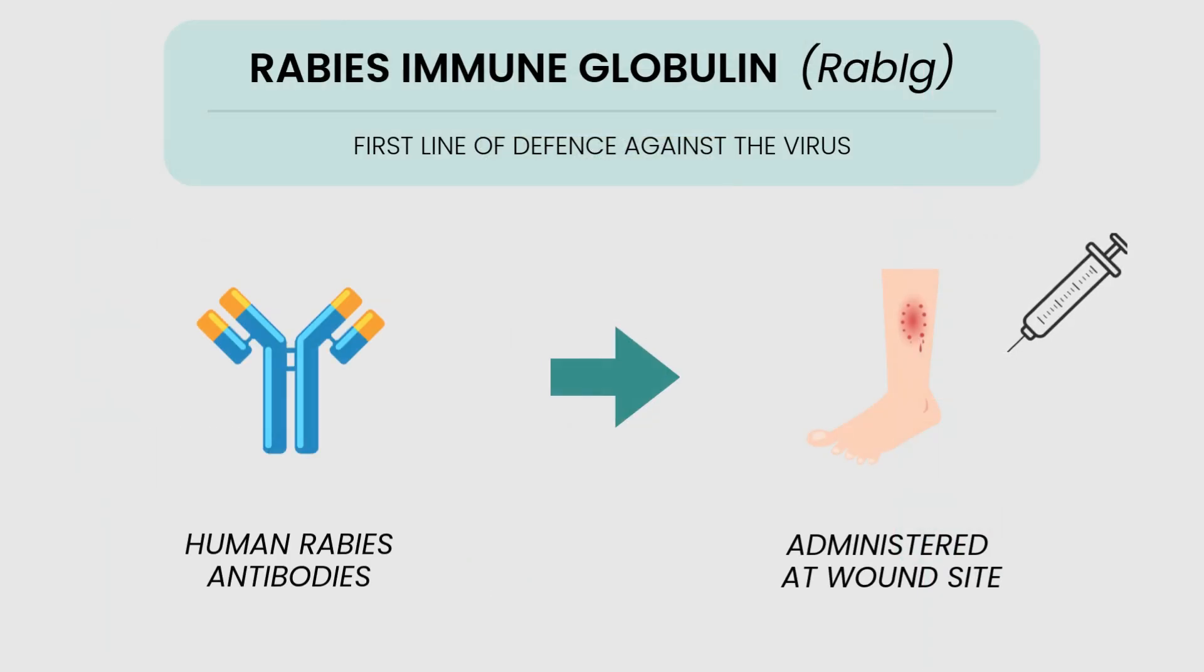In addition to the vaccine, treatment also involves rabies immunoglobulin injection directly at the transmission site, which provides passive immunity, that is, antibodies starting to fight the virus.